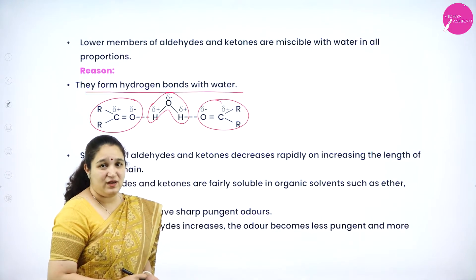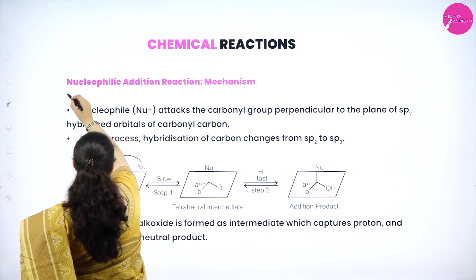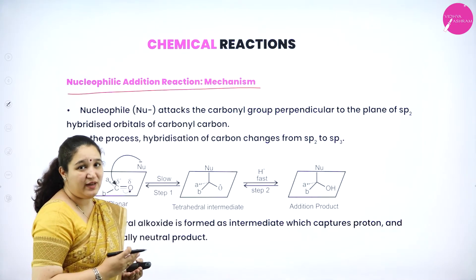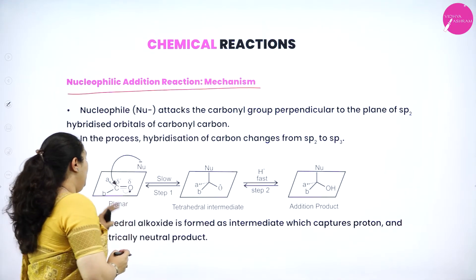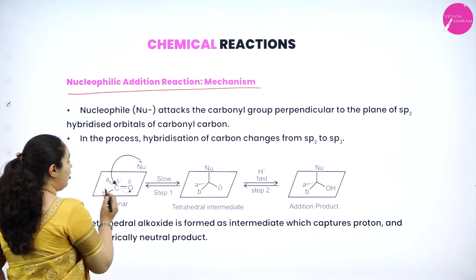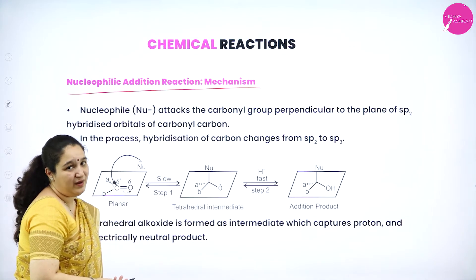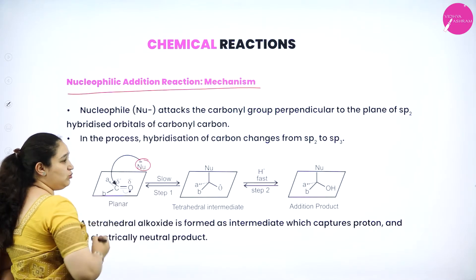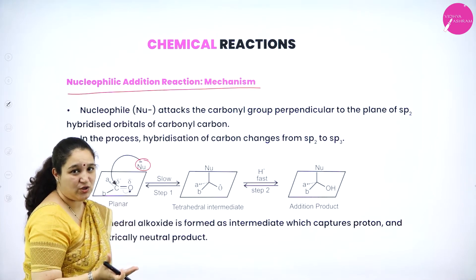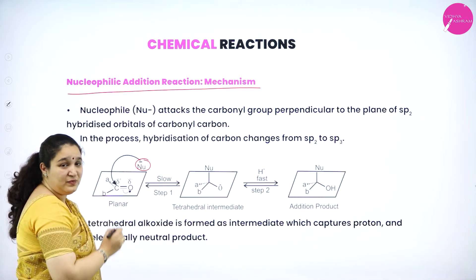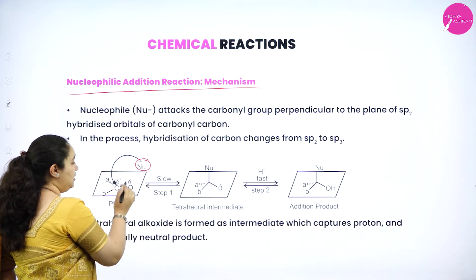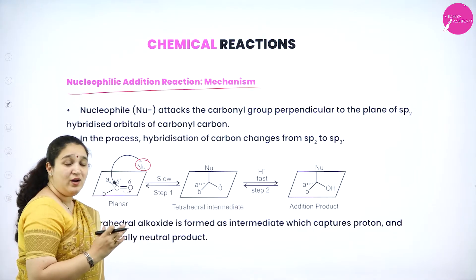Under chemical reactions, first we learn the nucleophilic addition reaction mechanism. In the carbonyl group structure — if it is an aldehyde, A or B will be hydrogen; if it is a ketone, A and B will be an alkyl or aryl group. A nucleophile is an electron-rich species with a lone pair of electrons, extra electron, or negative charge. The nucleophile attacks the carbonyl carbon because oxygen is more electronegative than carbon and pulls the electron cloud towards itself, giving oxygen a partial negative charge and carbon a partial positive charge.